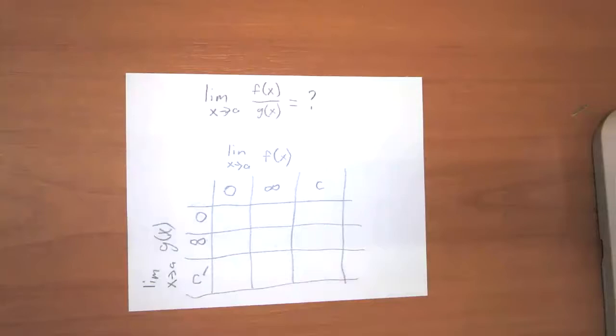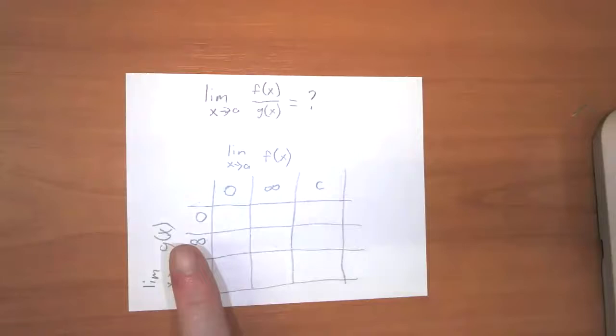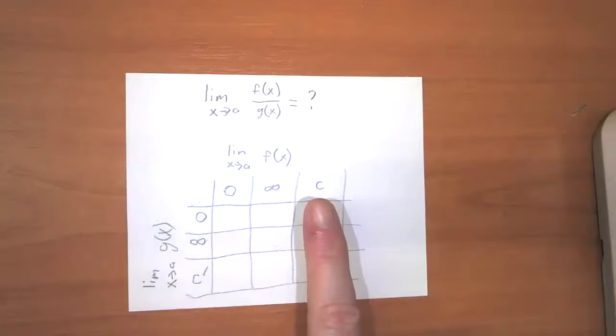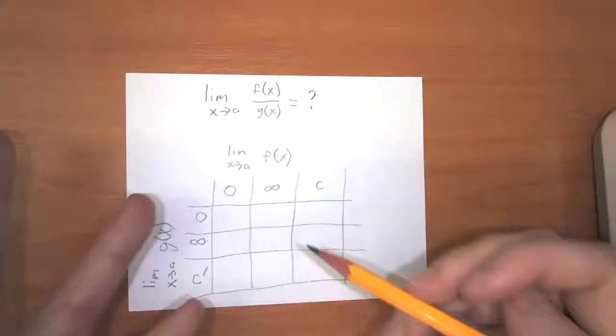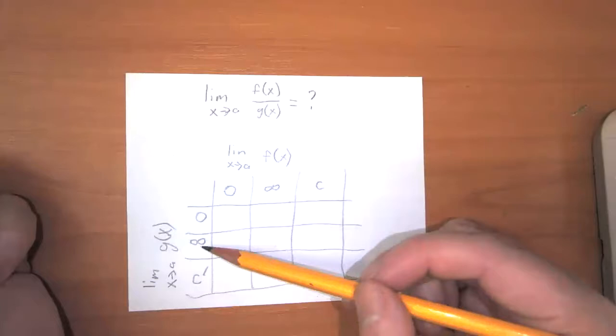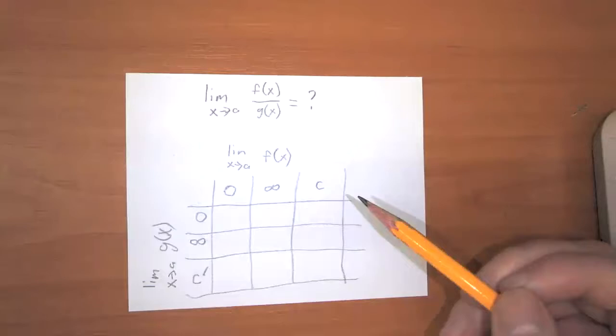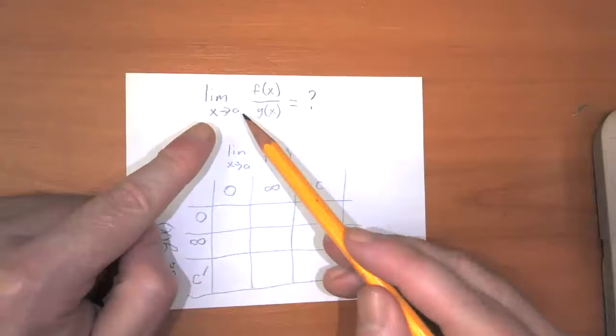We didn't make this chart back at the beginning of the year, but we very well could have. Think about the limit as X approaches A of F(X) and the limit as X approaches A of G(X). The limit could either approach zero, approach infinity, or approach some actual number. If the numerator approaches C and the denominator approaches C prime, then the limit of the quotient is just C over C prime.